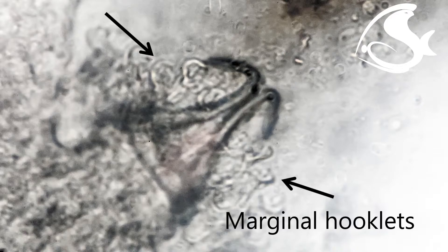Attachment to the fish is made with the marginal hooklets on the opisthaptor. They break the site of attachment and cause localized hemorrhages. Some fish may flash, turning sideways as if attempting to rub away the irritation. Heavily infested fish show anorexia, lethargy, and hemorrhages.